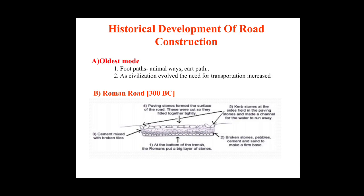The Roman technique of road construction consisted of excavation of a trench of a width equal to that of the carriageway in a straight path, removing the loose soil from the top. The trench was cut to a depth until the hard strata was reached. One or two layers of large foundation stones were laid in lime mortar at the bottom, with the thickness of the bottom layer ranging from 10 to 20 centimeters.